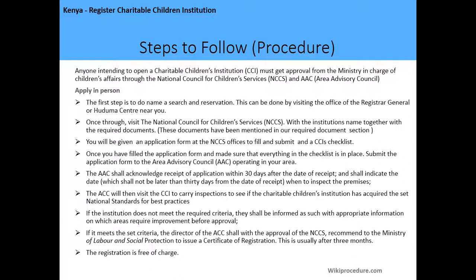Once you have reserved the name for the charitable children's institution, visit the NCCS with the institution's name together with the required documents. At the NCCS offices you will be given an application form to fill and submit, and also a CCI checklist to ensure you have all the required documents. Once you fill the application form, make sure that everything on the checklist is in place, then submit the application form to the Area Advisory Council operating in your area.